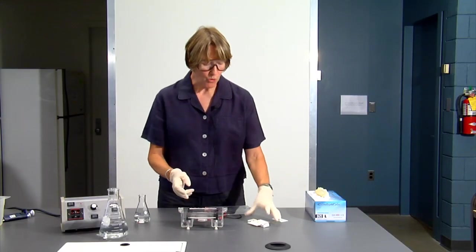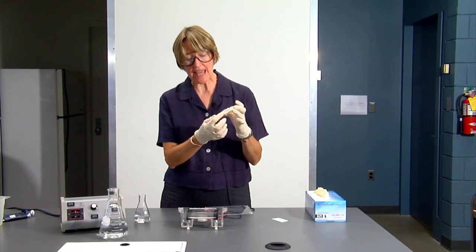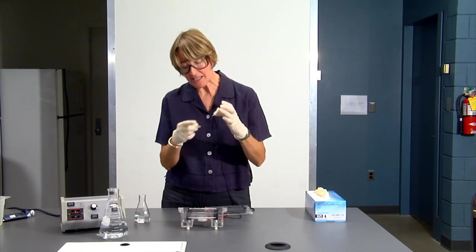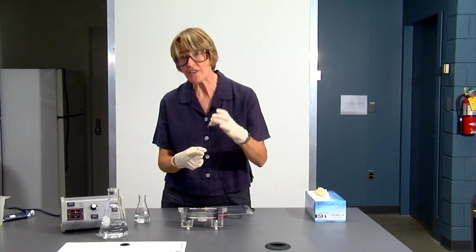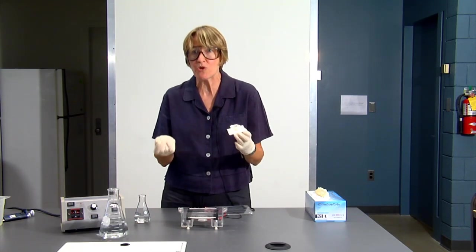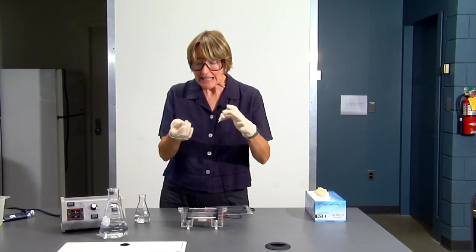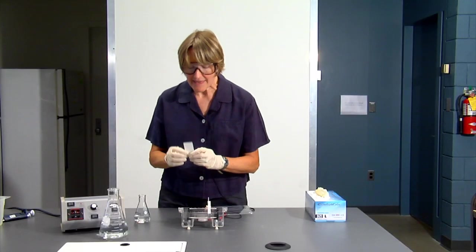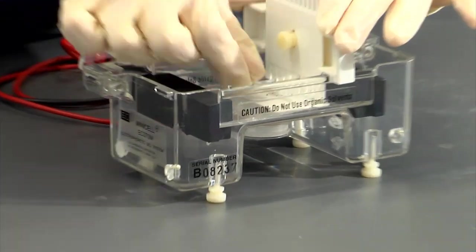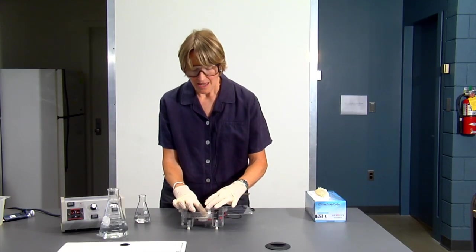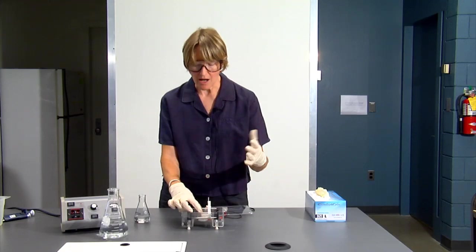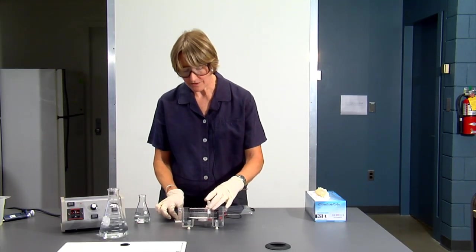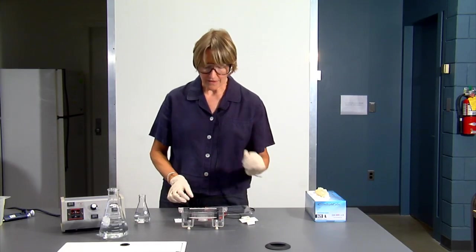Once you've got your gel box set up and you're ready to pour, you want to check out your comb. We're going to use the eight-well side of the comb. Before we pour the gel, we want to make sure there's a space between the bottom of the tray and the comb. You don't want the comb to go all the way through your gel, or you'll make a hole. You want the sample to be in the gel and move through the gel matrix. We'll take the spacer and use it to make sure the spacer fits underneath our comb. If the spacer fits underneath the comb, then you know your comb is set properly and you're going to make wells, not holes. Now you can remove the spacer and remove the comb and you're ready to pour your gel.